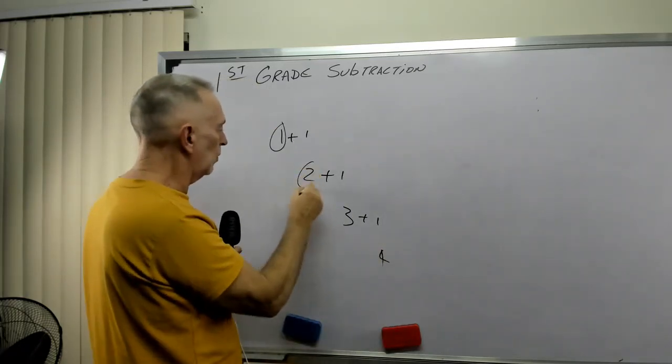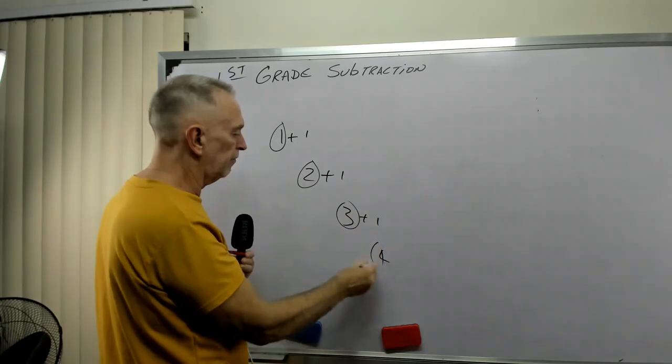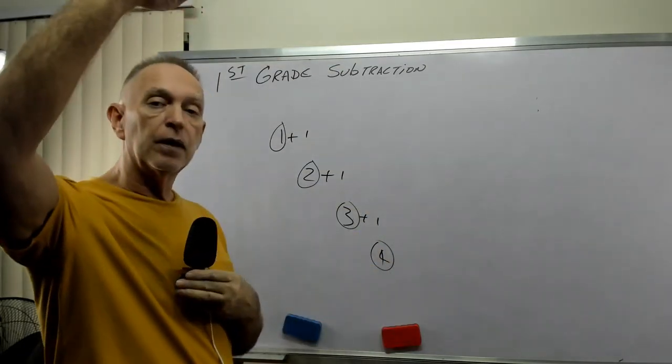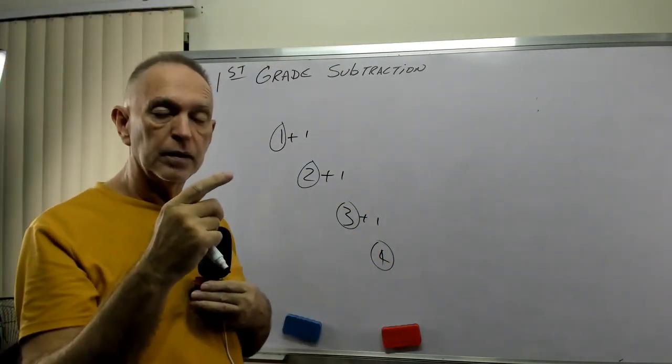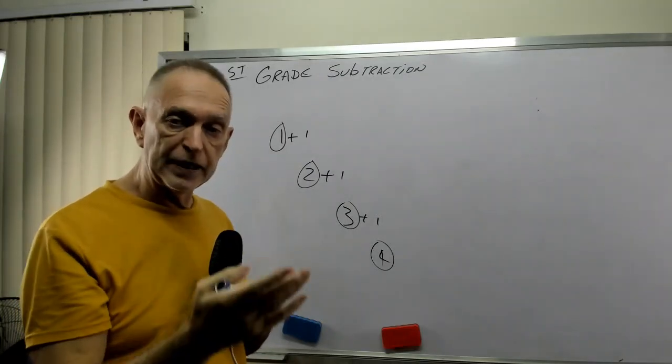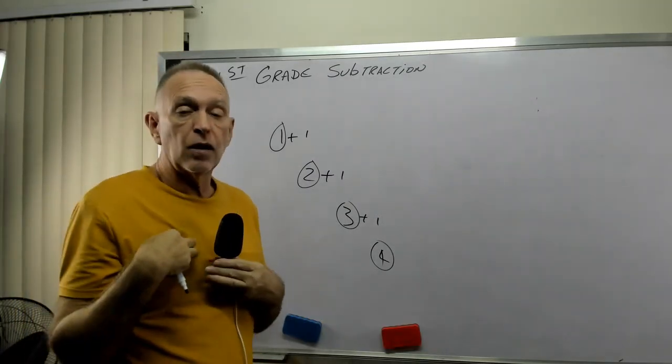So when we count, we would be saying one, two, three, four. If we count up by one, we're adding one each time. So we've been adding all along.